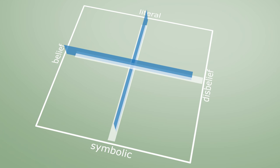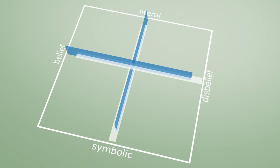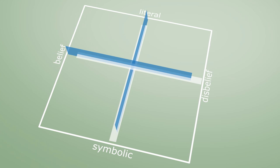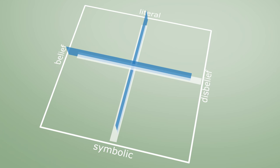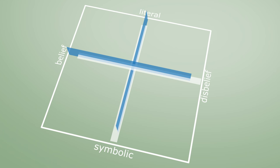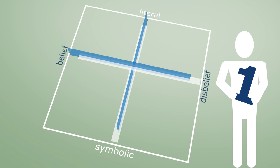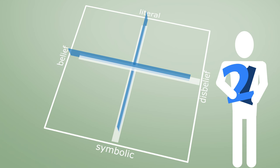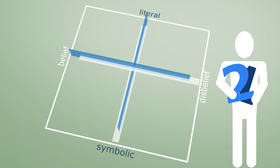For literal thinkers everything is definite and fixed. For symbolic thinkers everything needs to be interpreted. If you want to know how someone deals with questions regarding life, then look at one, belief in transcendent reality, and two, literal or symbolic thinking.